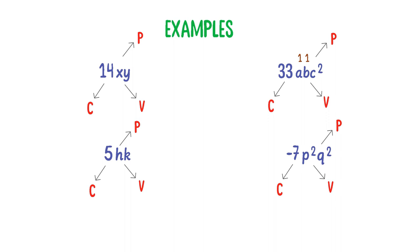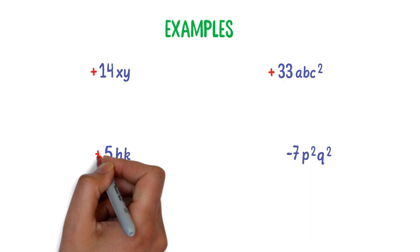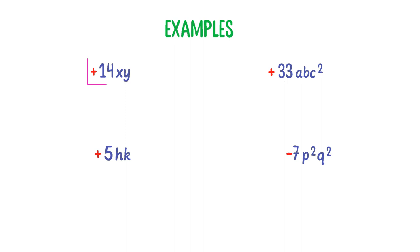Now let me teach you how we combine different algebraic terms together. You must know the positive or negative sign of the constant part of algebraic terms. For example, the sign of 14 is positive, the sign of 33 is positive, the sign of 5 is also positive, while the sign of 7 is negative.